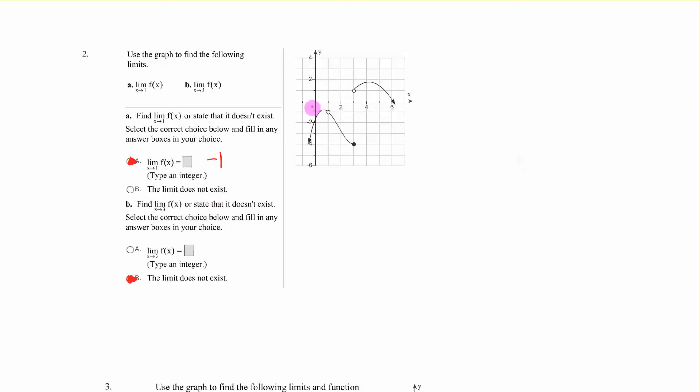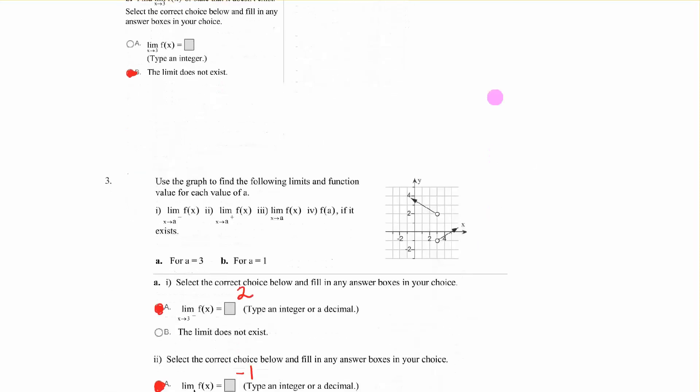x approaches 3. Well, here's 3. And from the left, we come into here. From the right, we come in here. Those are not the same. So the limit does not exist. Has to be the same from left and right.